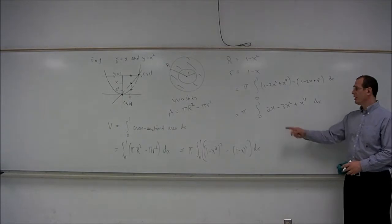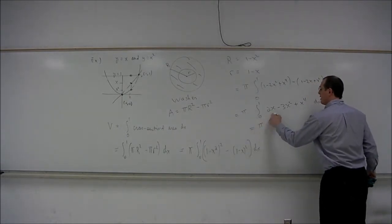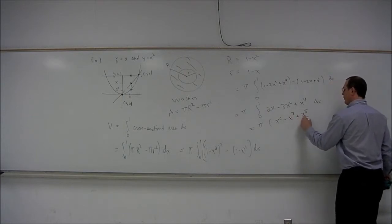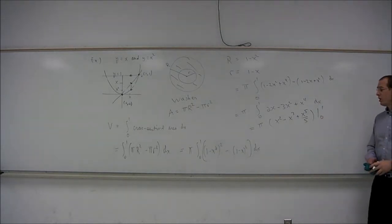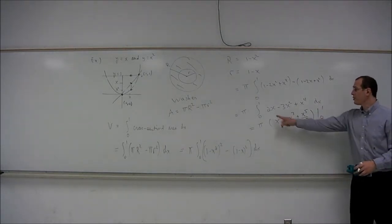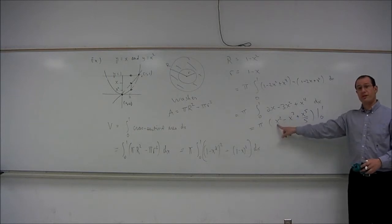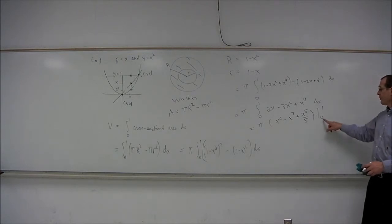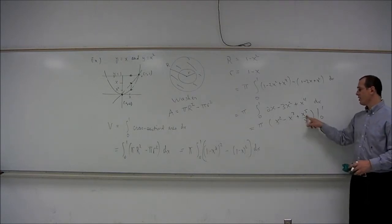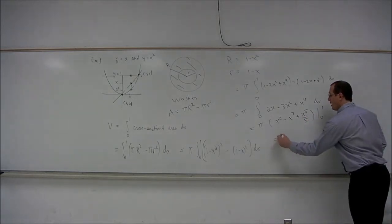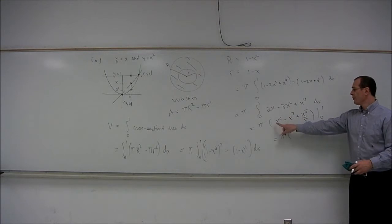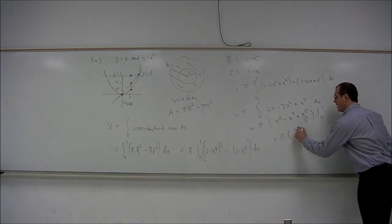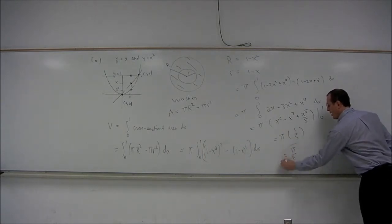Now it's a pretty easy finish. Integrating the polynomial, we get pi times x squared minus x cubed plus x to the fifth over 5, evaluated from 0 to 1. Plugging in 0 gives 0. Plugging in 1: 1 minus 1 is 0, plus 1 fifth. So pi times 1 fifth, or more simply, pi over 5.